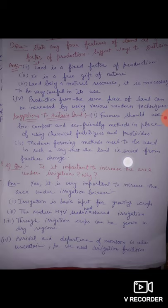Second, modern HYV seeds need more water to grow, so they need a short supply of irrigation. Third, in dry regions where water is not available, we can grow crops using irrigation. Fourth, the arrival and departure of the monsoon is also uncertain, and since our agriculture is dependent on monsoon, we need to increase the area under irrigation.